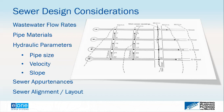Regardless of system type, there will be appurtenances within the sewer system beyond just the mainline sewer. Another key consideration where differences emerge is alignment and layout. Gravity and pressure sewer systems are laid out differently, and the alignment options differ — the pressure sewer system may offer some advantages in terms of sewer system alignment and layout.